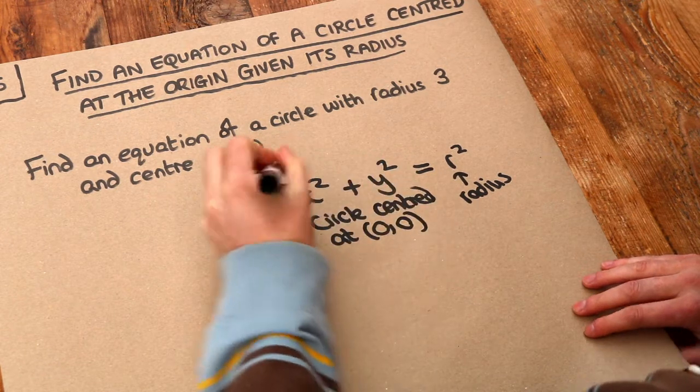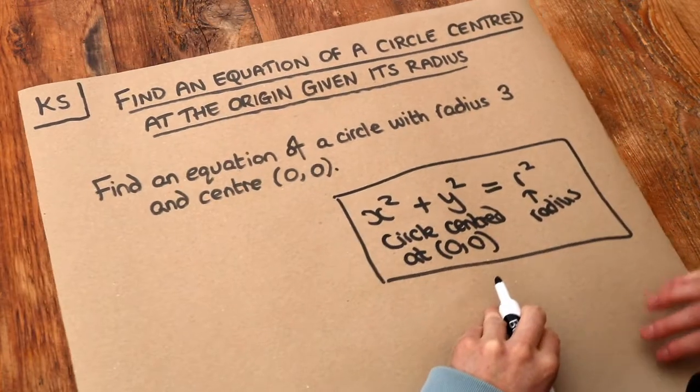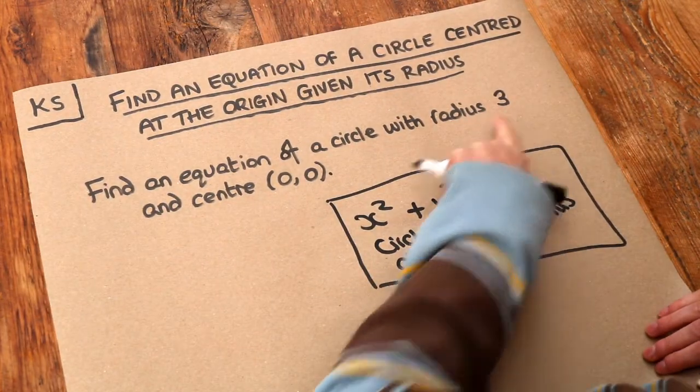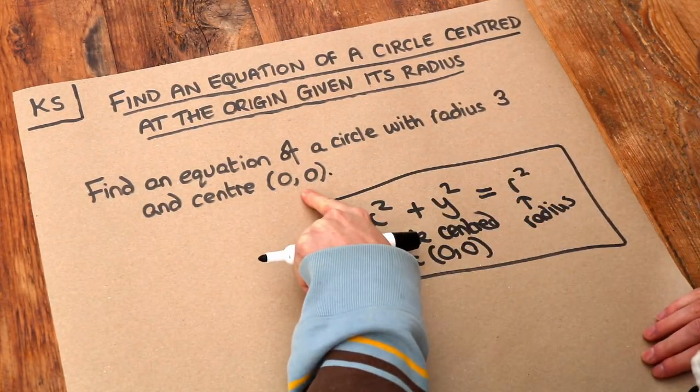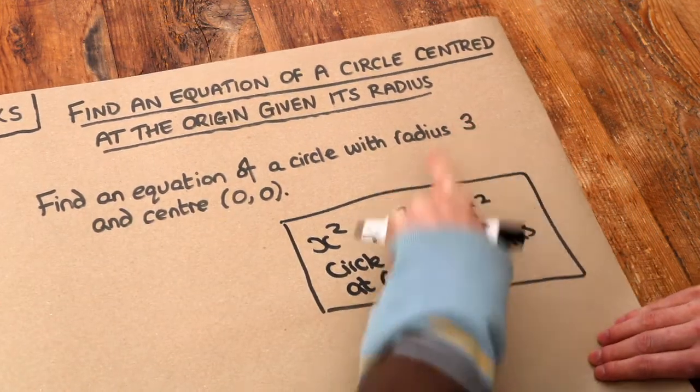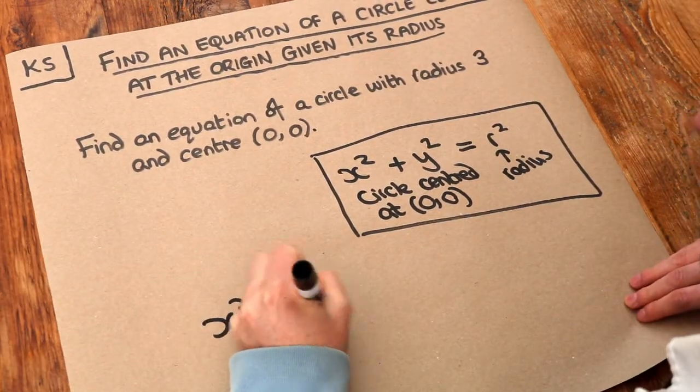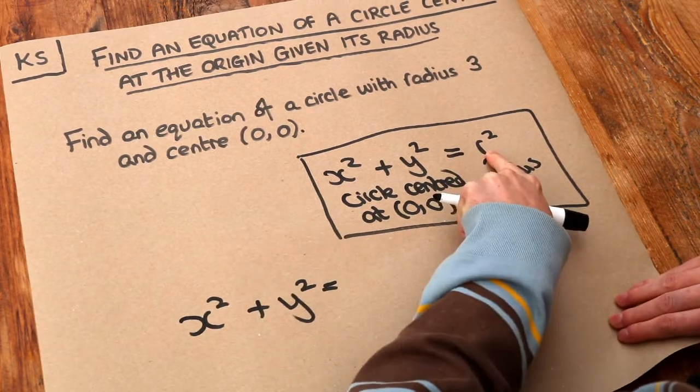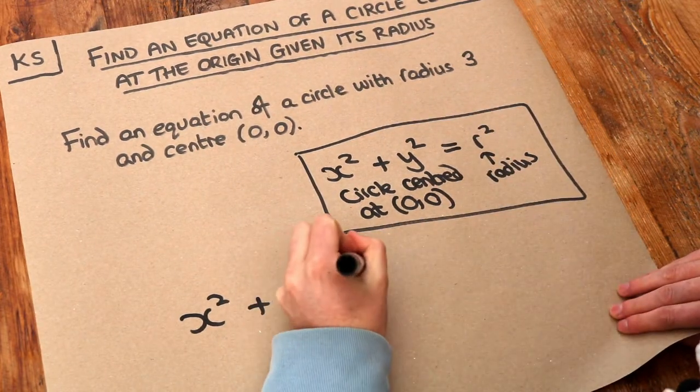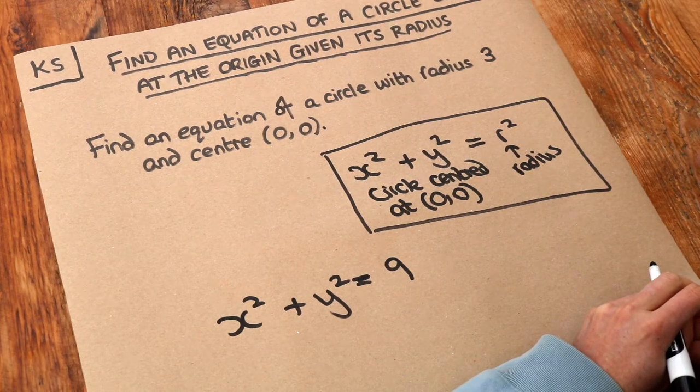That's all we need to solve this particular question. The radius is 3 and our circle is centered at the origin (0,0). We just need to substitute the r value of 3 into this equation. So we have x² + y² = 3², and 3² is 9. That is the final equation of our circle.